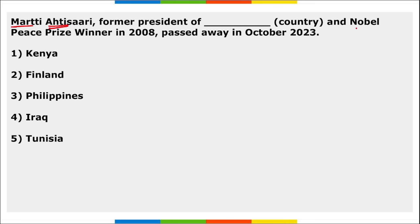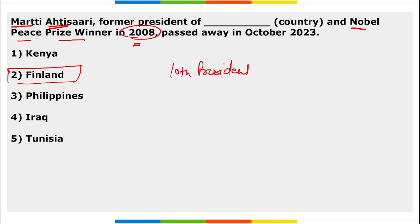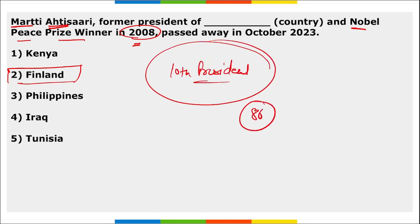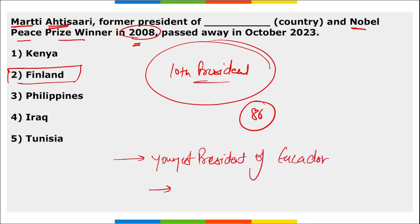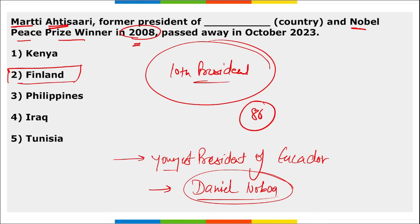Martti Ahtisaari, former president of Finland and Nobel Peace Prize winner in 2008, passed away. He was the former 10th president of Finland and passed away at the age of 86 in Helsinki, Finland. Daniel Noboa has been appointed as the youngest-ever president of Ecuador.